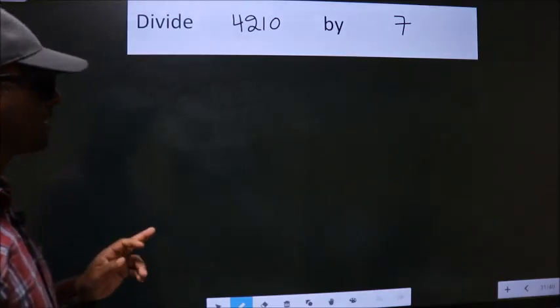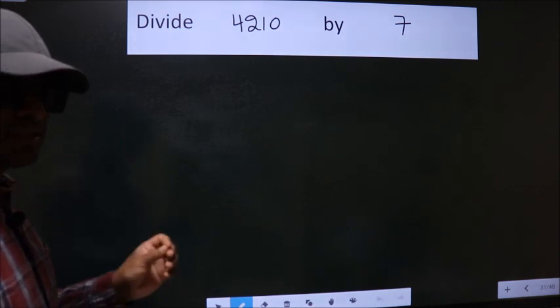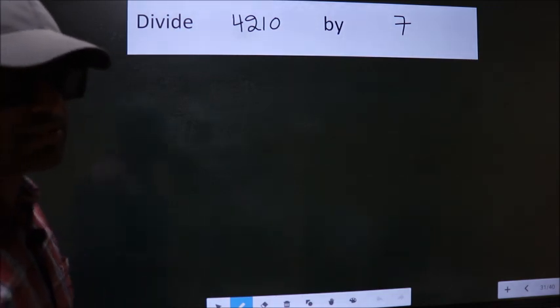Divide 4,210 by 7. To do this division, we should frame it in this way.